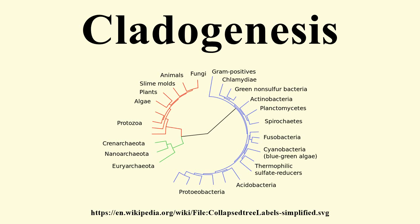Molecular Evidence: Molecular data can be used to see how the genome or DNA of specific species has diverged. This, along with fossil evidence, can be a good basis for seeing if two distinct species came from a similar ancestral species and if they were both alive at the same time.